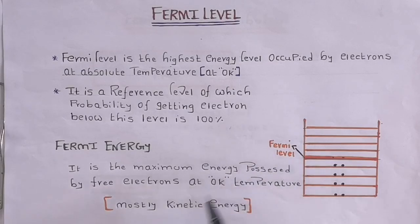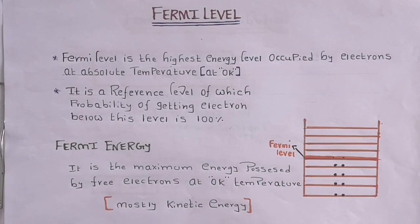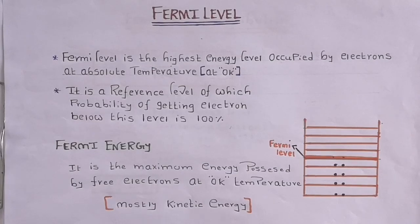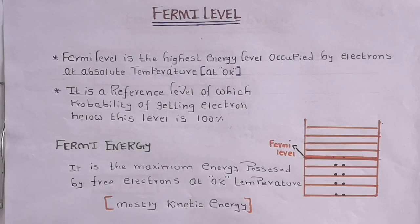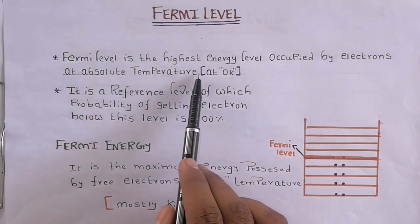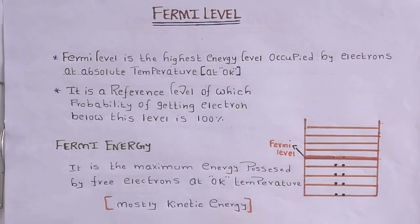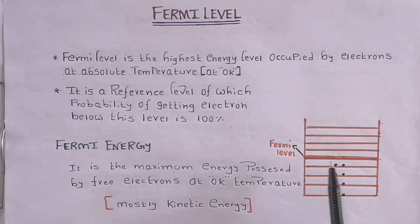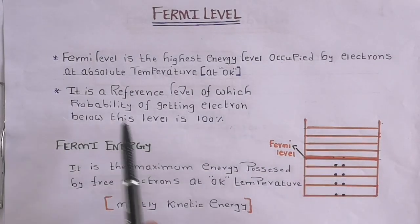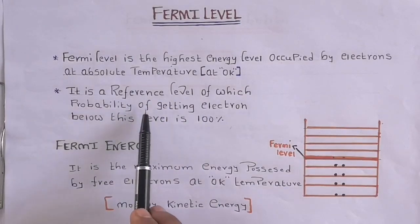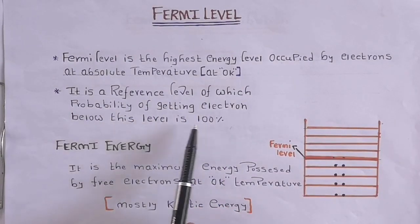At room temperature there is movement of electrons, so to determine which levels are filled we measure at absolute zero (0 Kelvin), where we consider there is no movement of electrons. Alternatively, we can take the Fermi level as a reference level below which the probability of finding an electron is 100%.